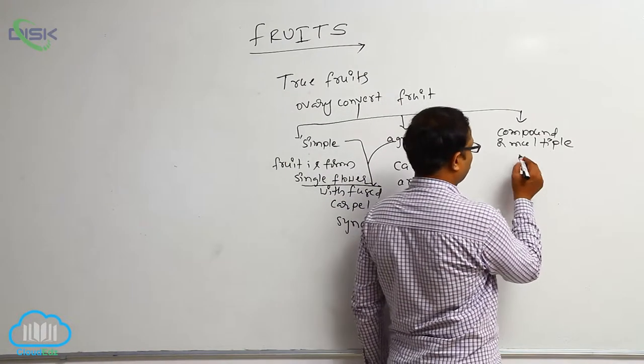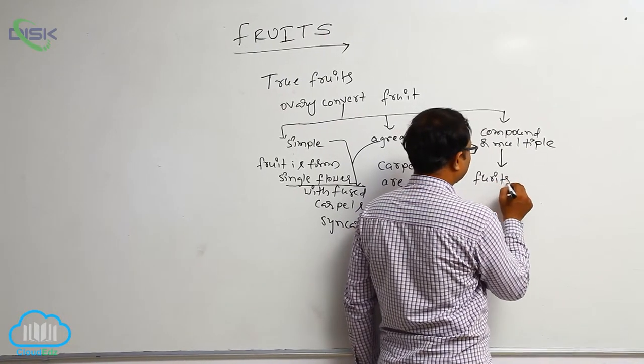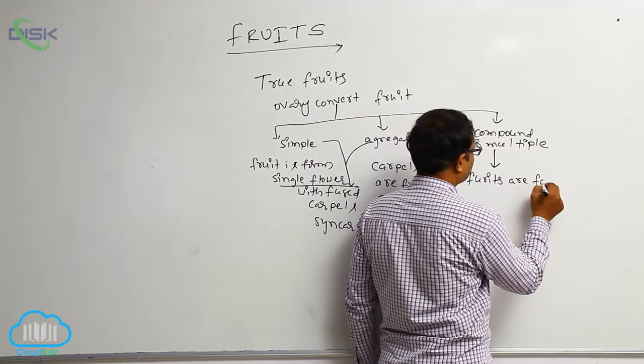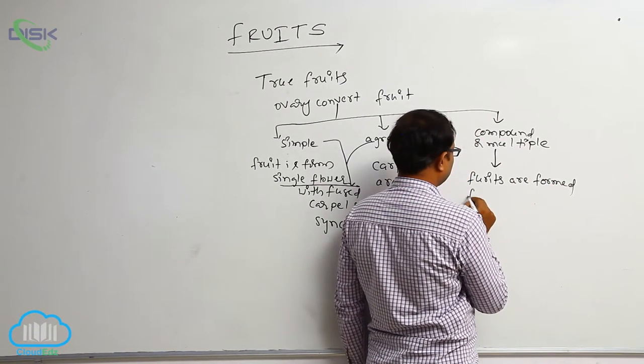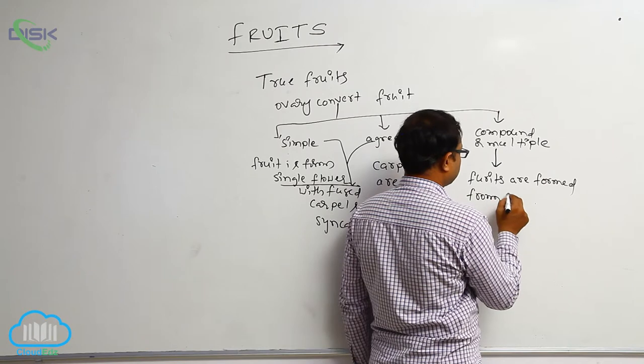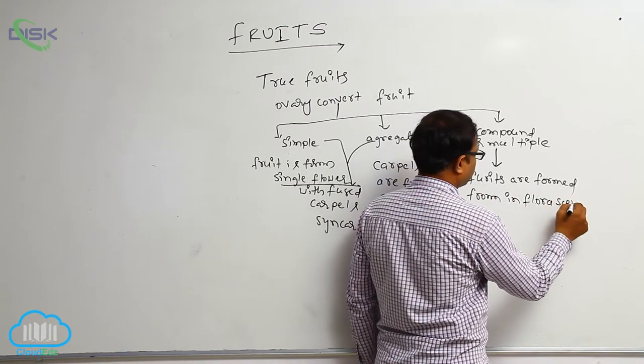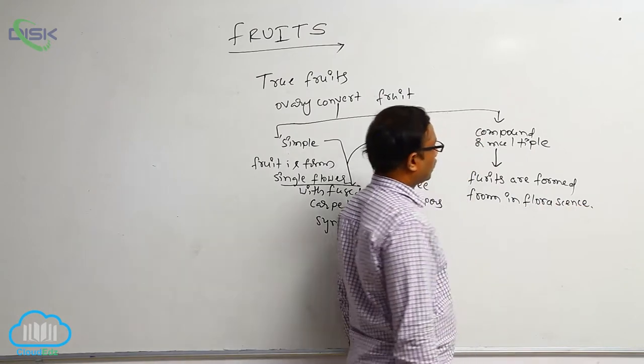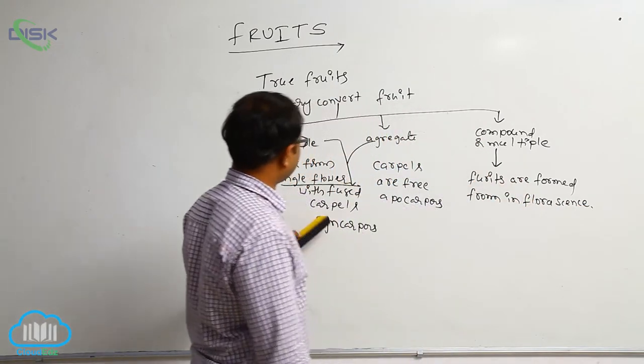Compound fruit. Compound fruit means if fruits are formed, fruits are formed from inflorescence. Inflorescence. This type of fruits are known as compound fruits or multiple fruits. Basically, three types of fruits.